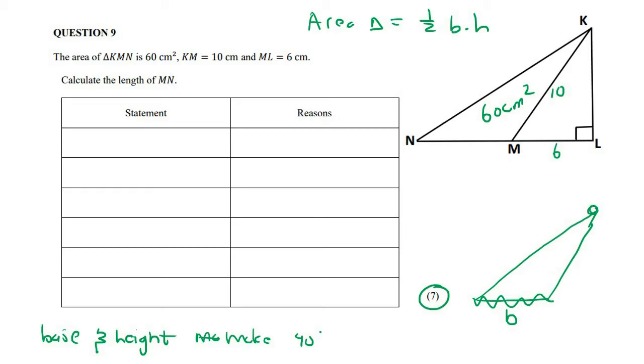So what you would do is you would go to this little corner here, and you would actually just make a dotted line, and then you could make that a dotted line, and there, that part there, that is your height.